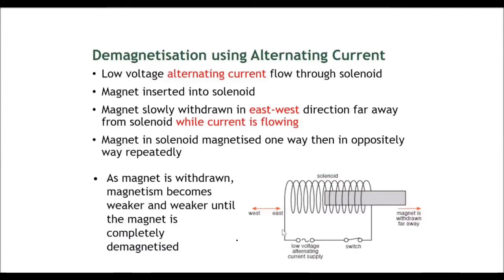Another method for demagnetization is using alternating current. Alternating current means the current flows in different directions — first one way, then another — due to which the substance starts losing its magnetic properties. First it becomes magnetized, then the current changes direction and it becomes demagnetized, while you are moving the magnet away from the solenoid. Slowly it loses its magnetic properties, becoming weaker and weaker, because the magnet is magnetized one way and then the opposite way repeatedly, until it is completely demagnetized.